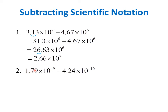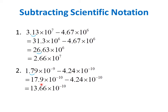How about the difference of 1.79 times 10 to the negative 9 and 4.24 times 10 to the negative 10? These two have different exponents, so first we have to rewrite the number with the larger exponent. If we want to make negative 9 a negative 10, we have to move this decimal point one place to the right. So we get 17.9 times 10 to the negative 10, and we copy the second term. Since they now have the same exponents, we can get the difference of the coefficients. 17.9 minus 4.24 is 13.66, then we copy times 10 to the negative 10.